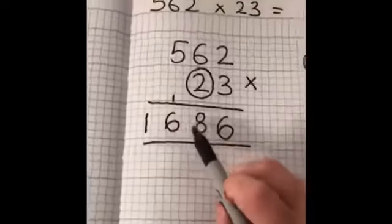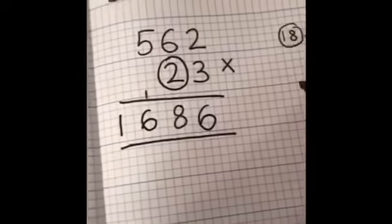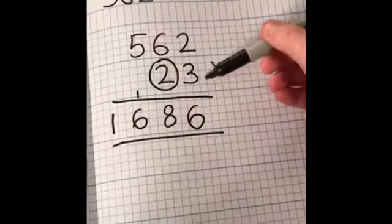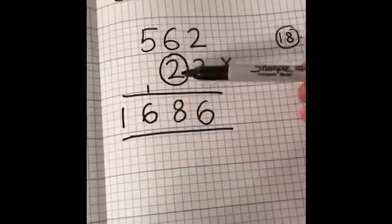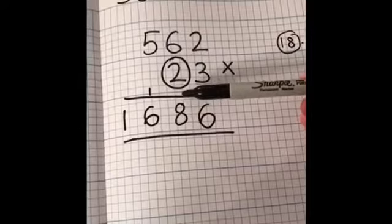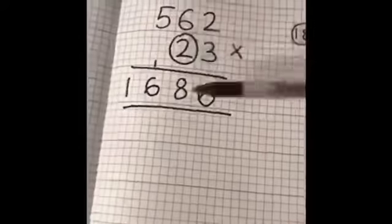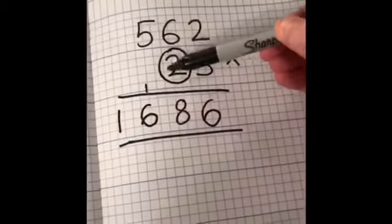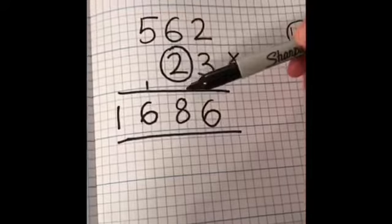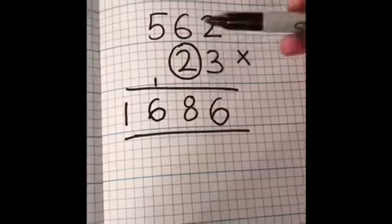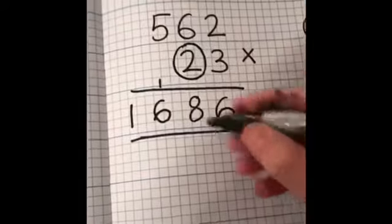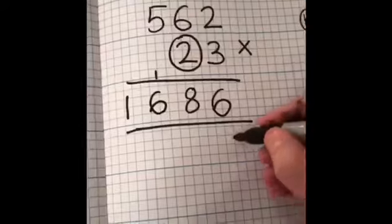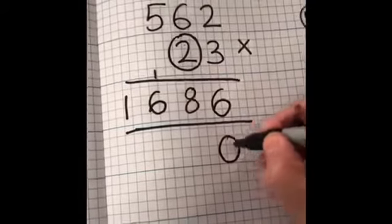So that is the answer to 562 times 3. But we need to now multiply the same number by 20. Think back to earlier when I said about putting that circle – the reason why I put that there is because this number here isn't 2; it's actually got a value of 20, a multiple of 10. You may have heard the term placeholder, and I'm going to bring that down so it reminds me that I need to put my zero here.